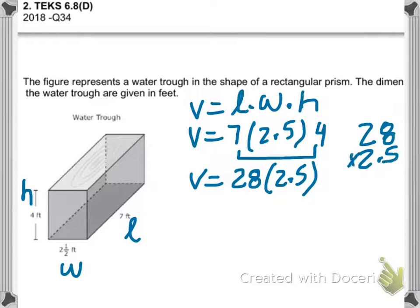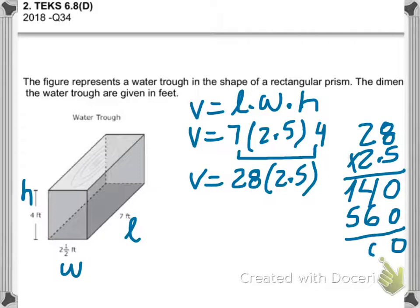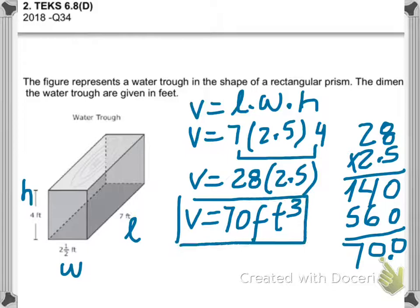Twenty-eight times two point five — doing the math, we get the answer: seventy. So seventy cubic feet is the answer to this problem.